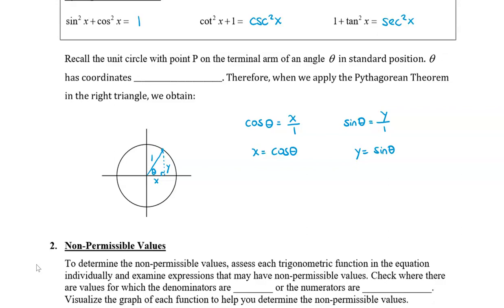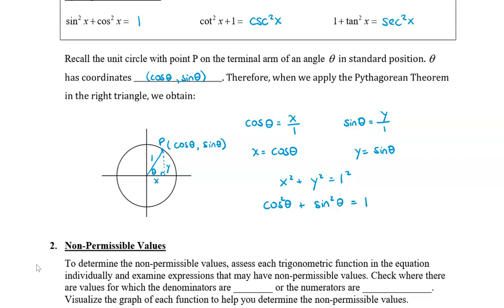So point P is (cos theta, sine theta). Now we can apply the Pythagorean theorem in the right triangle: x squared plus y squared equals 1 squared. Substituting x with cos theta and y with sine theta, we get cos squared theta plus sine squared theta equals 1. We usually write the squared in between — for example, cos squared theta — so it's clear what's being squared. Rearranging, we get sine squared theta plus cos squared theta equals 1. And that's how we get the first identity.